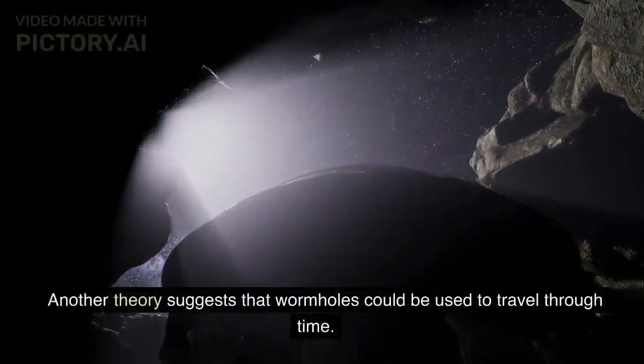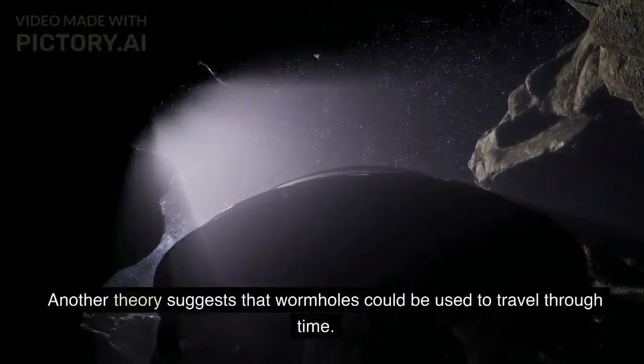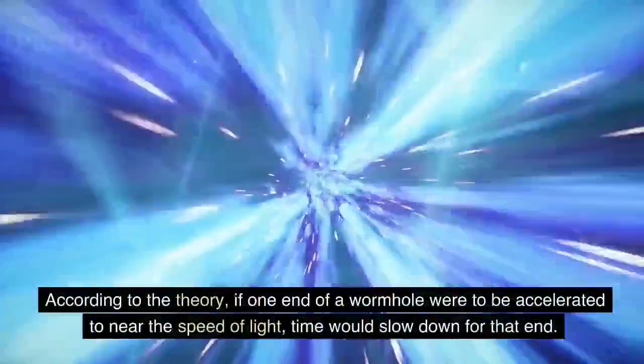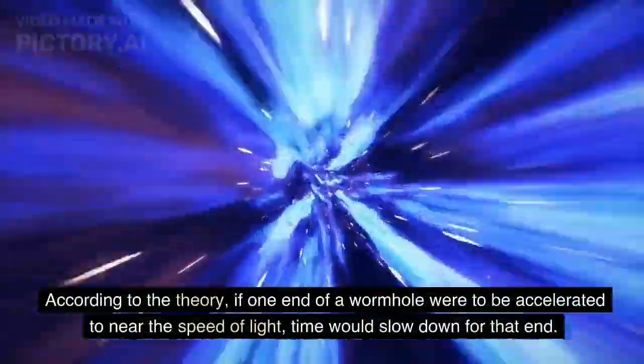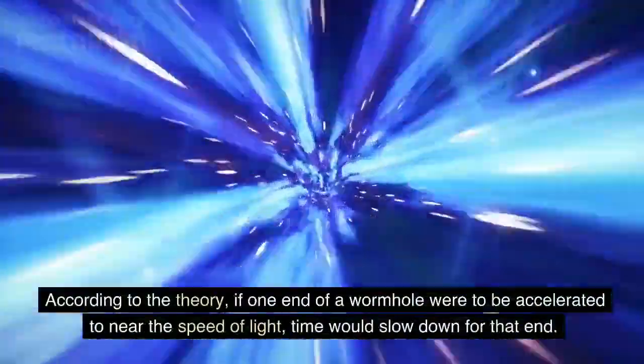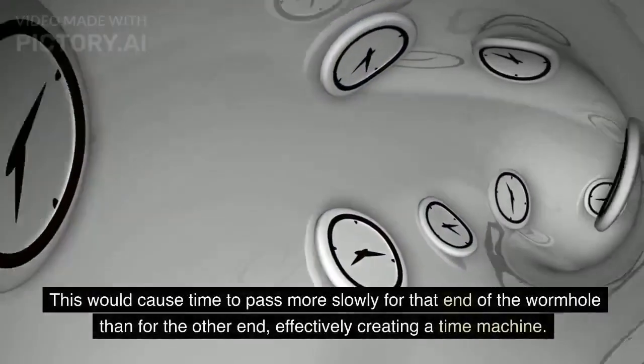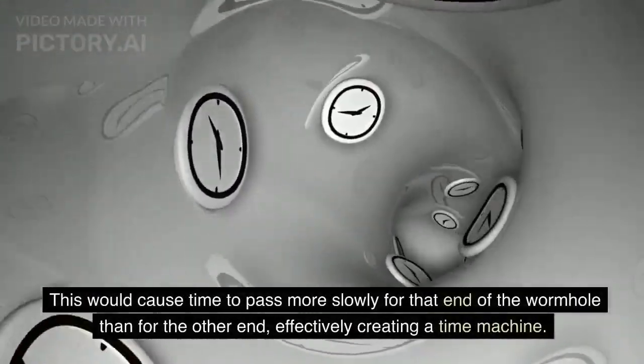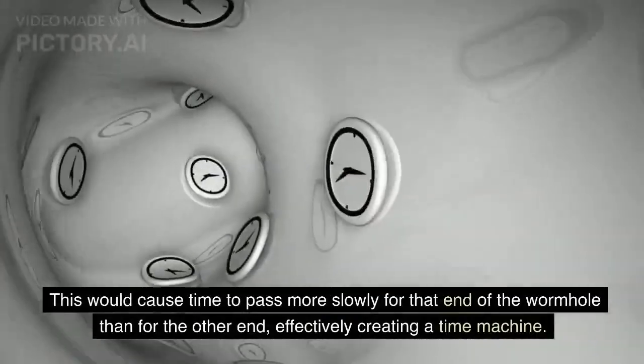Another theory suggests that wormholes could be used to travel through time. According to the theory, if one end of a wormhole were to be accelerated to near the speed of light, time would slow down for that end. This would cause time to pass more slowly for that end of the wormhole than for the other end, effectively creating a time machine.